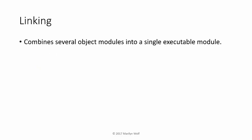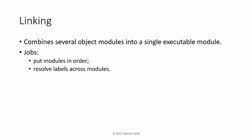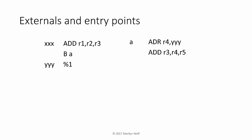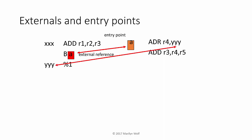Linking is the step that takes several object modules and combines them into a single executable. It puts the modules in a particular order and location in memory and resolves labels that refer between different modules. For example, the left-hand module creates entry points XXX and YYY, while the right-hand module has entry point A. Since A is referenced in the left-hand module as an external reference, the linker replaces that reference with the entry point location. The same is done for YYY in the right-hand code.